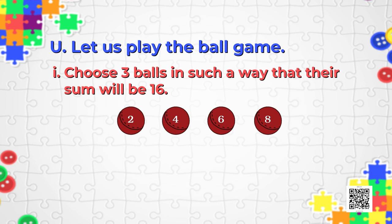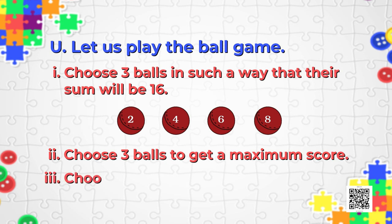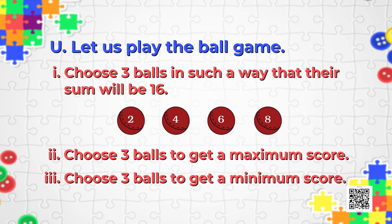Amazing! The second sub-question is: choose three balls to get a maximum score. Quickly do it! Now it's time for the third question: choose three balls to get a minimum score. Can you tell me what the minimum score is with these four balls? Remember, you have to choose three balls.